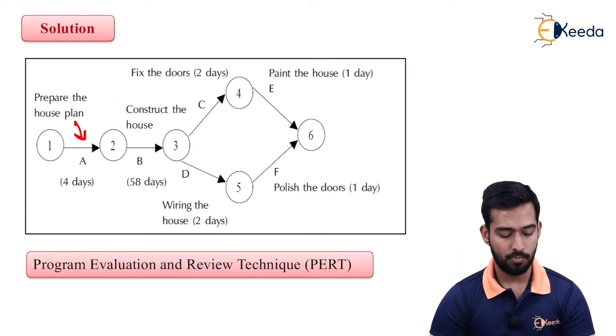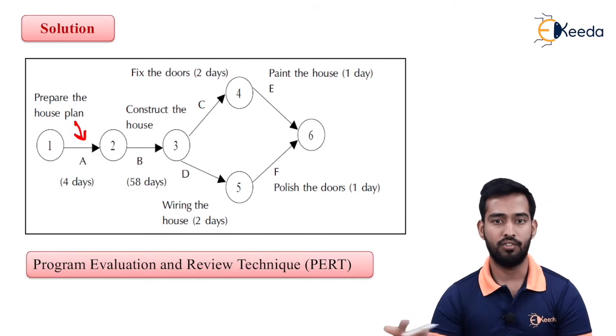Keep in mind, this is your Program Evaluation Review Technique. We have two techniques we will be seeing in different videos coming further. So this is all about how the numbering process will work in your Fulkerson rules. Thank you.